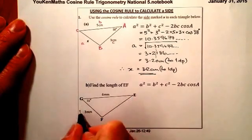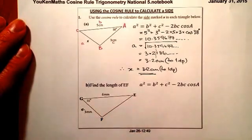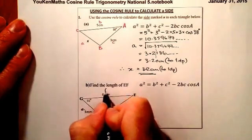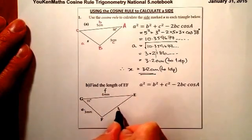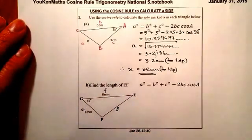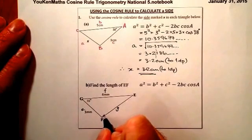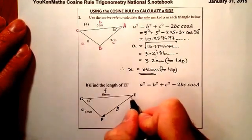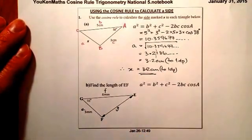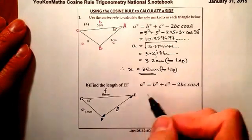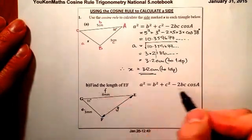So across from E will be E over here, so across from F will be F, and across from G is G here. And remember, it's this side here that I'm looking to calculate, so it's going to be EF.